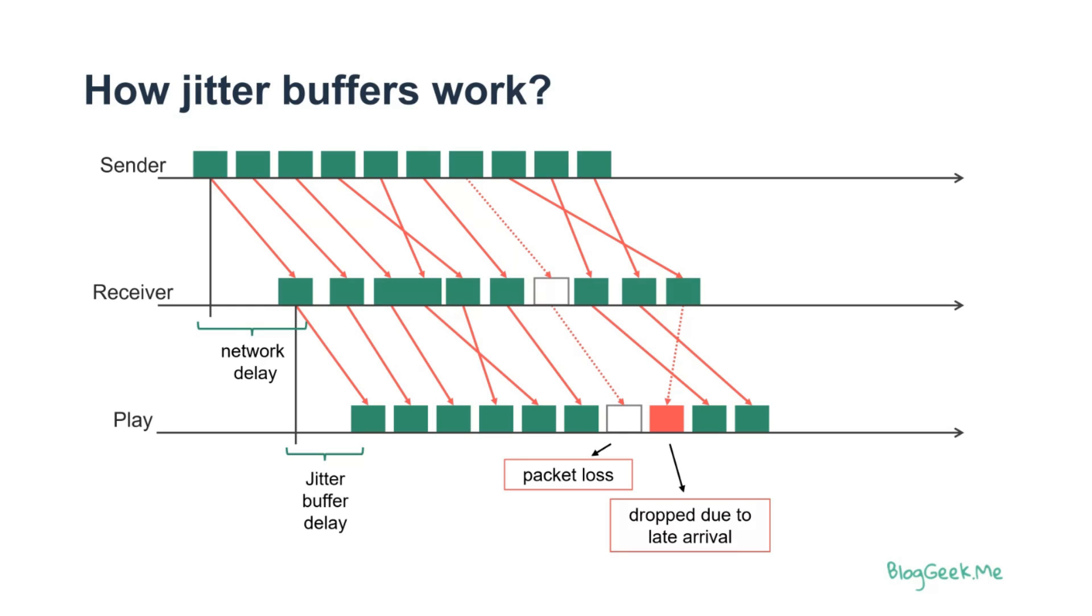Okay. So the jitter buffer receives these packets, reorders them, makes sure that packets that arrive can be played at the right time, and then decides when to play them.